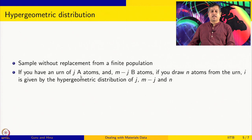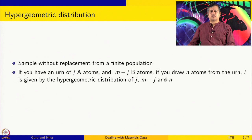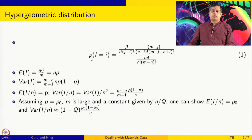If you have an urn of J A-atoms and M minus J non-A atoms, and you draw N atoms from this urn, then I of them are A — given by the hypergeometric distribution with parameters J, M minus J, and N. Because it is a finite population, every time you pull out an atom, the probability of picking another A atom changes depending on what was drawn. The probability mass function for the random variable I having realization i is: C(J, i) × C(M−J, n−i) / C(M, n), where the numerator counts ways to choose i A-atoms from J and n−i non-A atoms from M−J, and the denominator counts total ways to choose n from M.